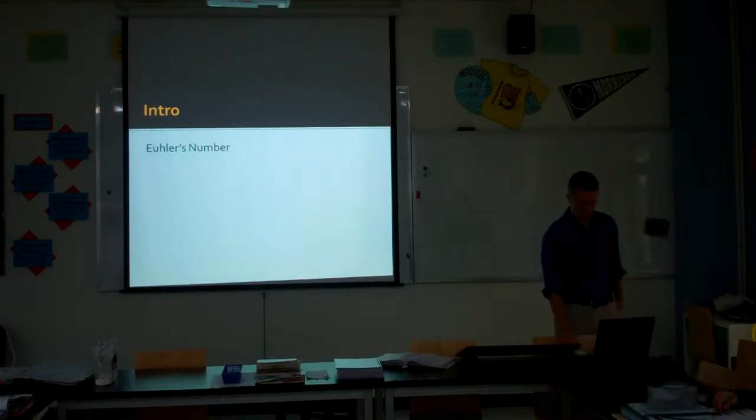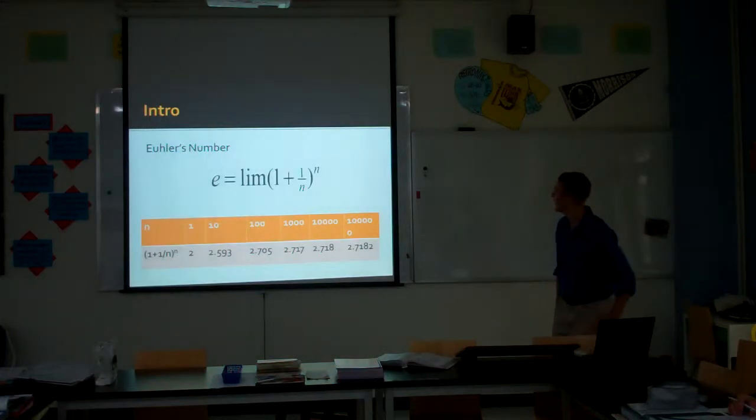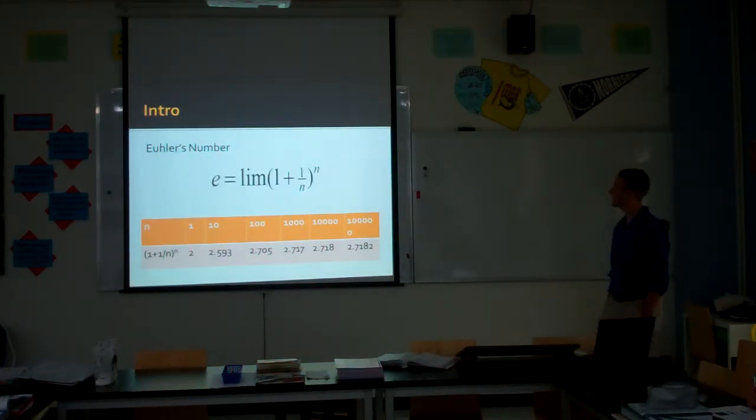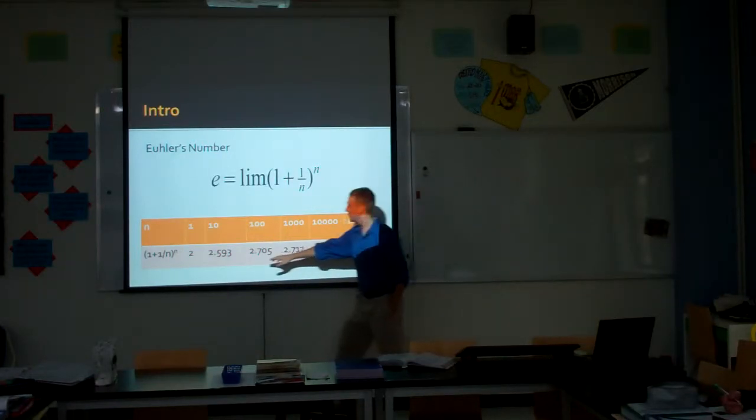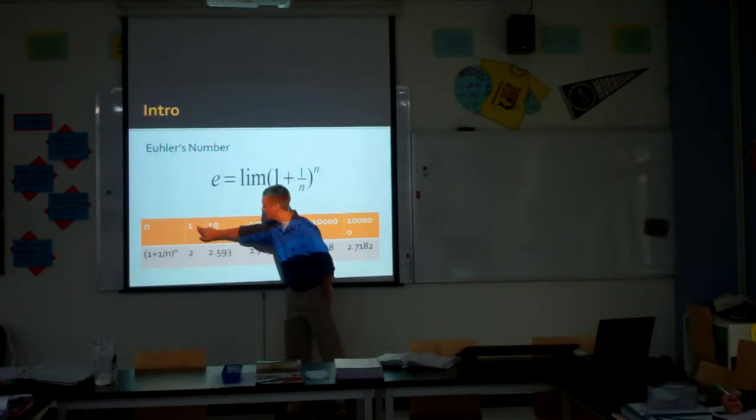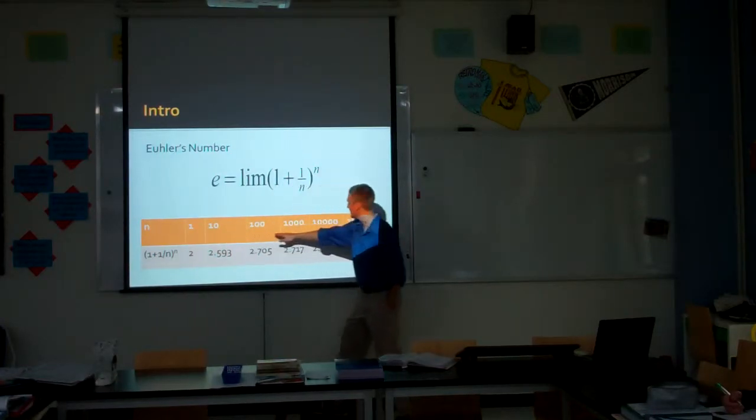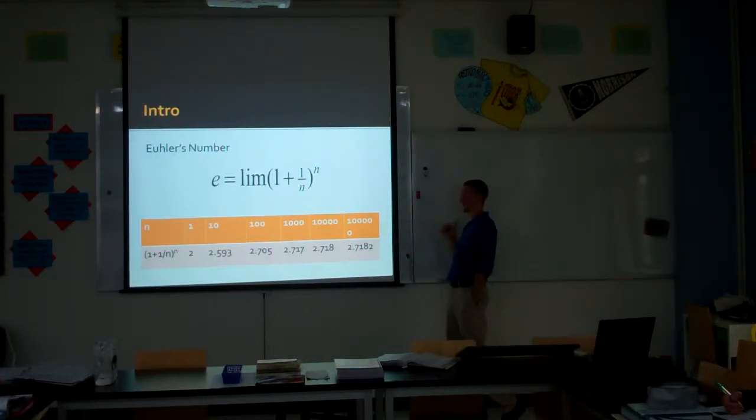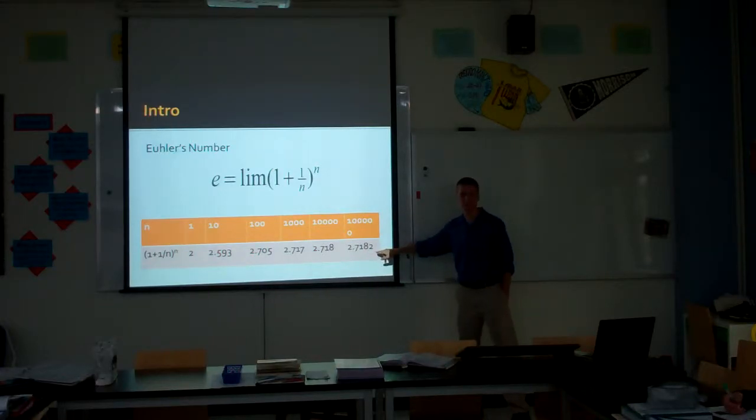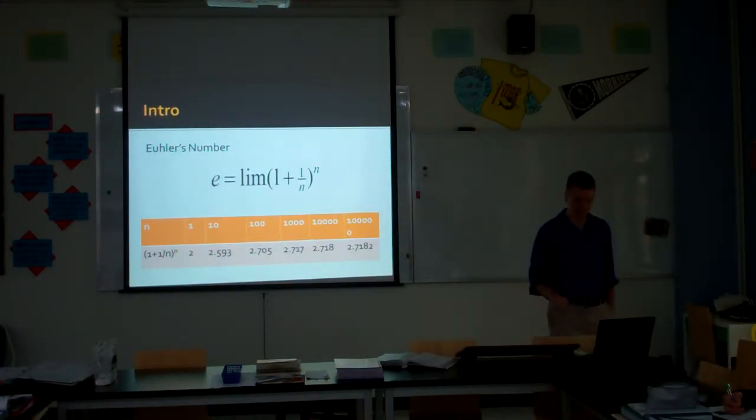You've even looked at an irrational base for exponentials, E, Euler's number. Defined as the limit as n gets larger and larger of this function, one plus one over n to the nth power. When you plug in one for n, you get two. When you plug in ten, you get that and so forth. All the way down to very, very large n, you start getting a very, very close approximation to this irrational number e. That's going to play an important role in today's lesson as well.